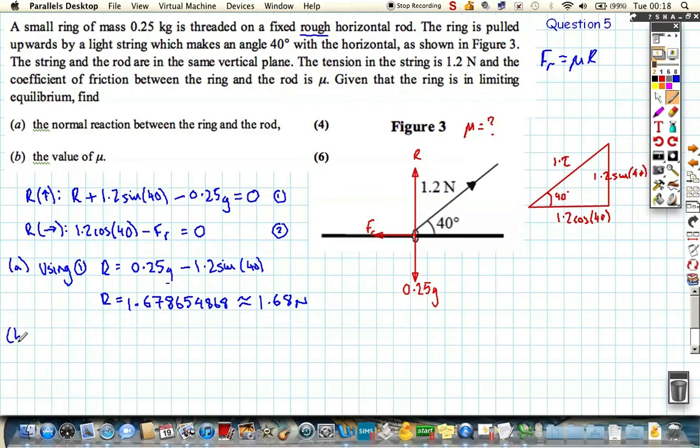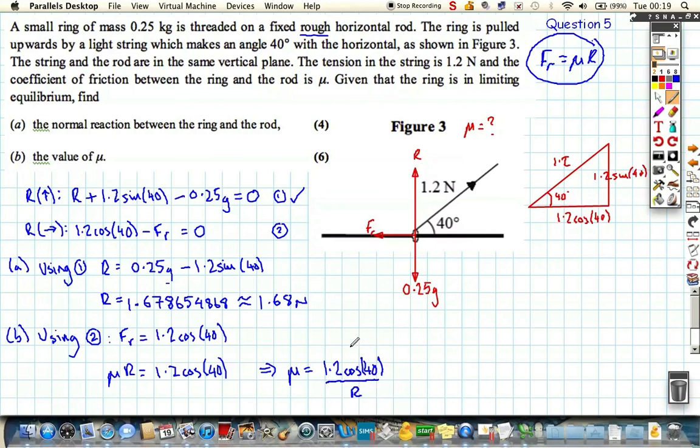Now looking at part B, we've obviously used part 1, so we're going to use equation 2, but we also need to use this fact up here. Now, we've not used that yet. So using part 2, we can see that friction is equal to 1.2 cosine 40, but we can replace friction with mu r when using the r that we've just found. So we find that mu r is equal to 1.2 cosine 40, or rearranging mu is equal to 1.2 cosine 40, all divided by r. Now, I'm going to do this on my calculator, but I'm going to use the full, unrounded answer for my reaction force.